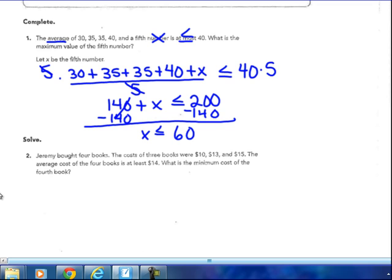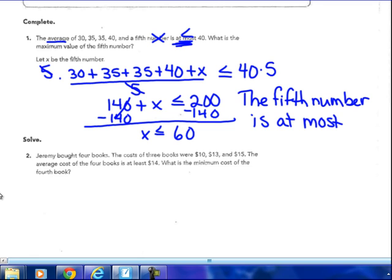And I get x has to be less than or equal to 60. So the fifth number, what is the maximum value of the fifth number? The fifth number at most could be 60 because of that equal symbol there. So my answer is the fifth number is at most 60. I'm using the words of the problem to answer it. And if that equal sign wasn't there, then I would say the fifth number is at most 59, or it could be 59 and a half. That equal symbol is telling me that at most it's 60.